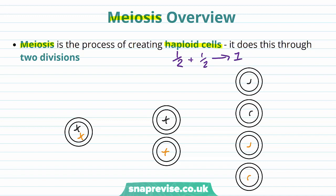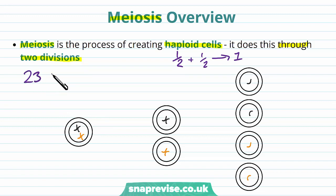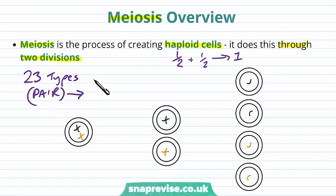The way that meiosis works is it does two stages of divisions — meiosis 1 and meiosis 2. To recap our genetic makeup in a human cell: we have 23 types of chromosome, and each one is in a pair, so we have 23 pairs of chromosomes. For number 1 we've got two chromosomes, number 2 we've got two chromosomes, number 3, and so on.